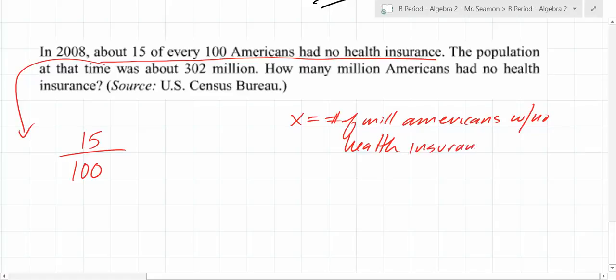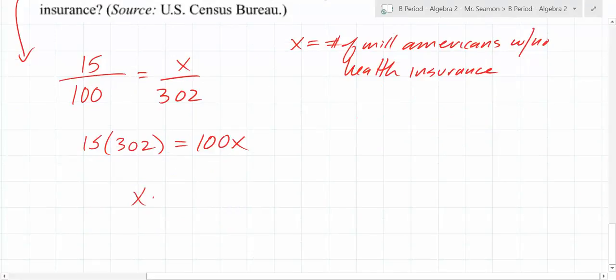So now what does that equal? You said it absolutely correctly, both Hannah and Alyssa. It's x over 302, and this is in millions. So 15 over 100 equals x over 302. Do we know how to solve a fraction equals a fraction? Cross multiply. So you get 15 times 302 equals 100x. So x equals 15 times 302 all over 100.